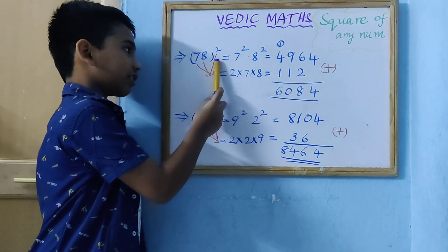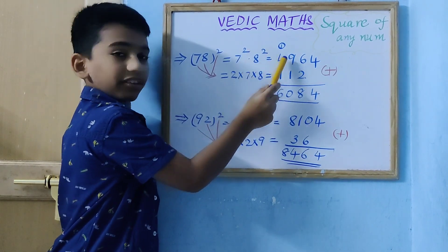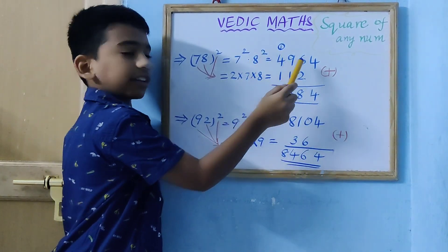Moving to the next square. 78 square equal to 7 square and 8 square. 7 times 7 is 49, 8 times 8 is 64.